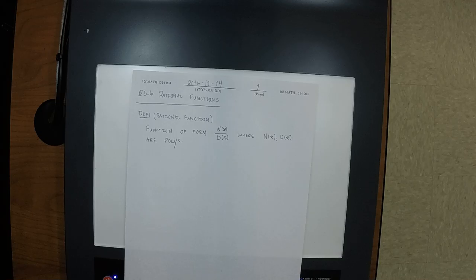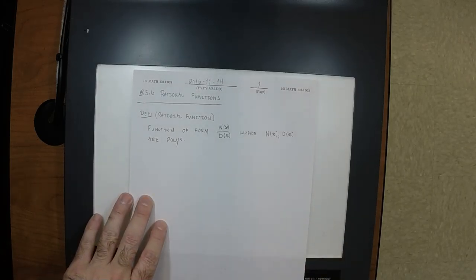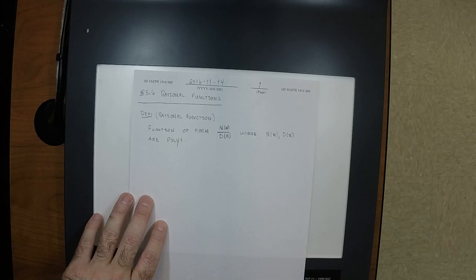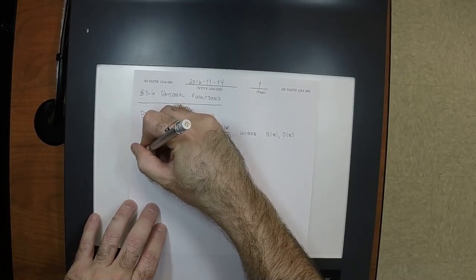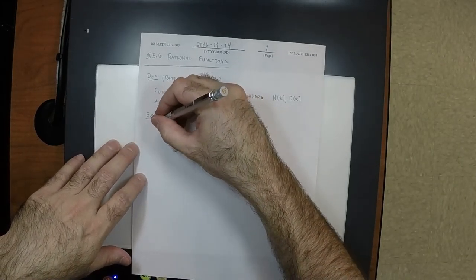...where n of x and d of x are polynomials. We've been talking so much about polynomials — finding their zeros, finding their end behavior, factoring them — and now we're going to talk about rational functions, which is just a fraction where the numerator is a polynomial and the denominator is a polynomial. Incidentally, I chose the name n for numerator and d for denominator.